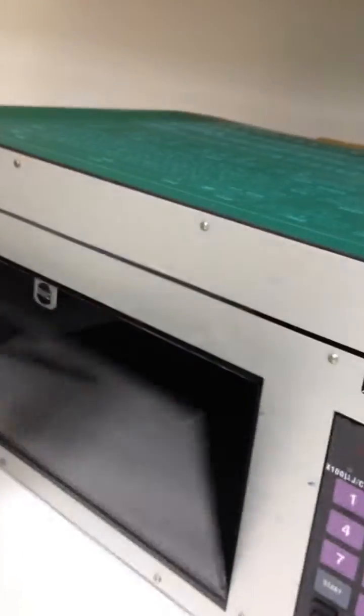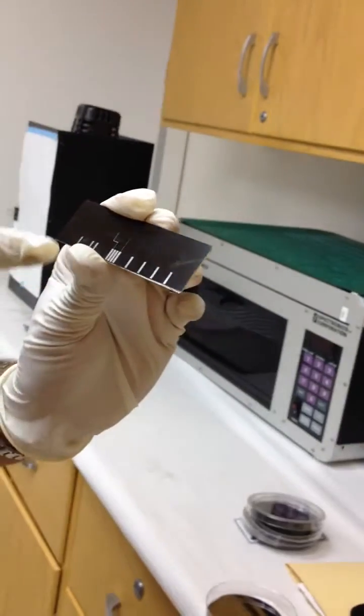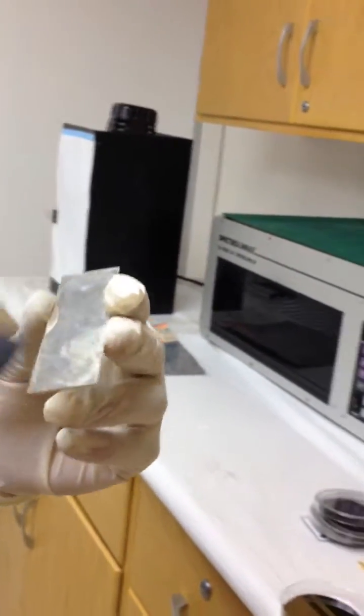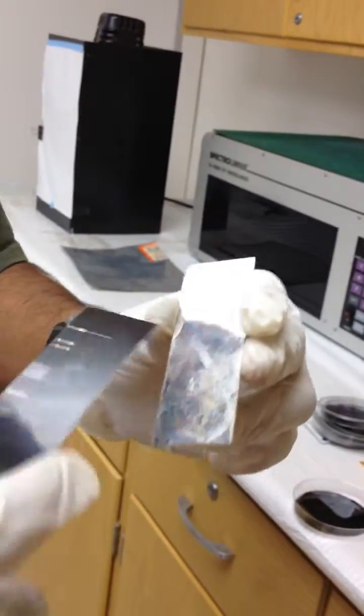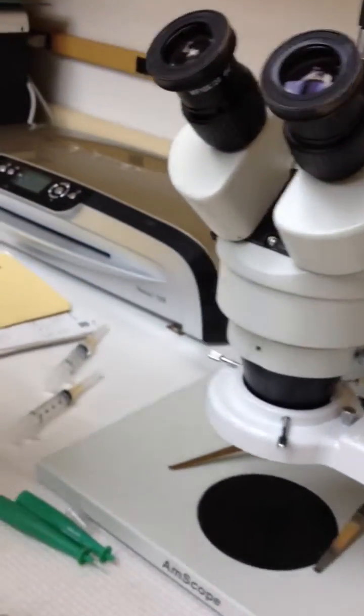Expose it to ultraviolet light in the cross linker, after which only the pattern remains on the slide. You take it off, hard bake it, and etch out all the extra material. After etching, what you're left with is a slide with just the pattern left behind.